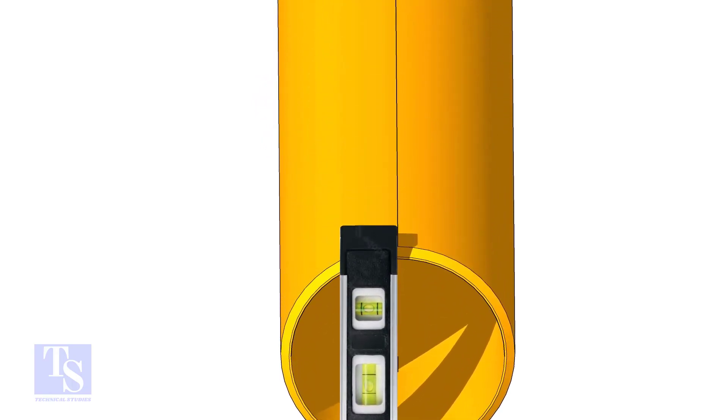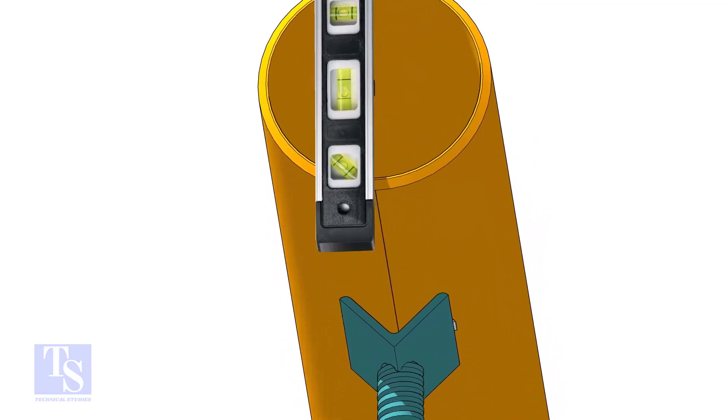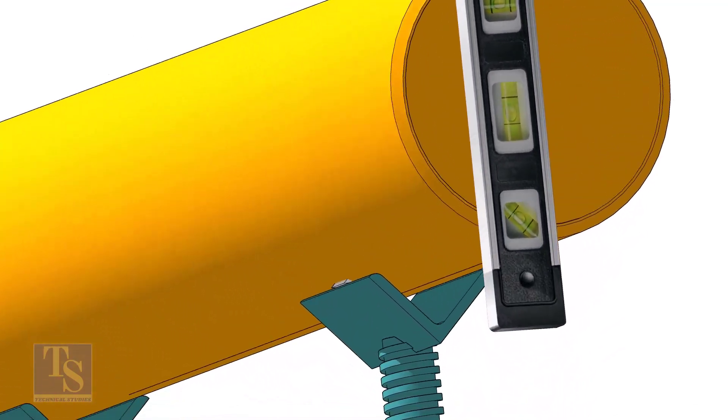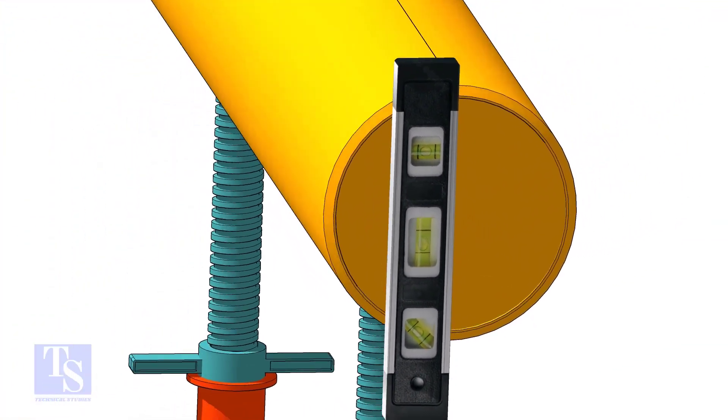Level the pipe horizontally and vertically as shown. After leveling, arrest the pipe to stop it from rotating.